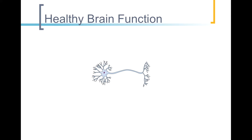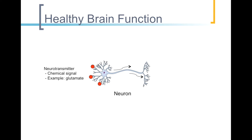Let's start with the healthy brain. We have neurons, which are basically the hallmark of brain cells and brain function. Neurons receive chemical messages from each other in the form of neurotransmitters. Here we have glutamate, an important neurotransmitter that excites neurons into conducting further chemical and electrical signals along their length, known as their axon. Proper brain function rests on the ability of neurons to send and receive messages.